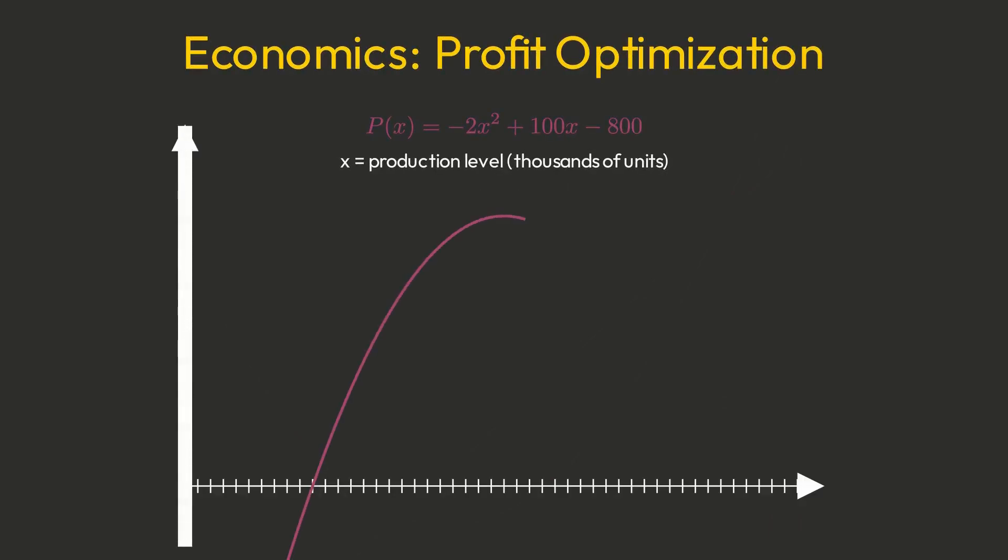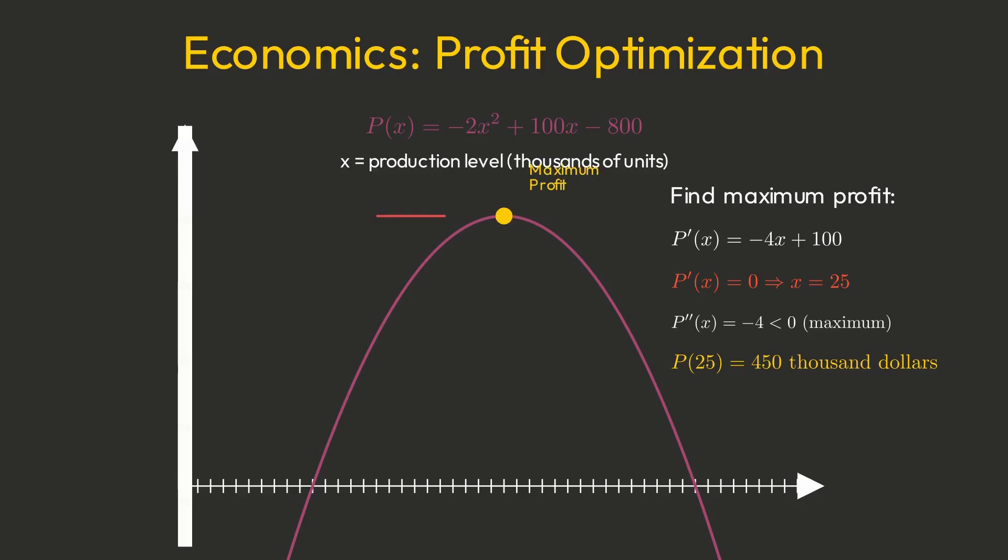A company's profit function is p of x equals negative 2x squared plus 100x minus 800. When is profit maximized? To find the maximum, set p prime of x equals 0. Negative 4x plus 100 equals 0, so x equals 25. The company maximizes profit by producing 25 units.